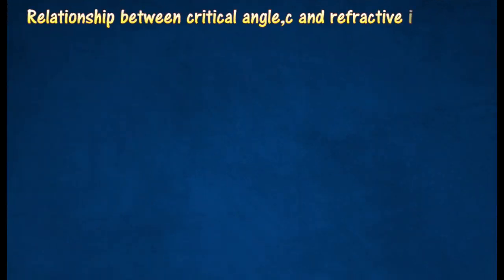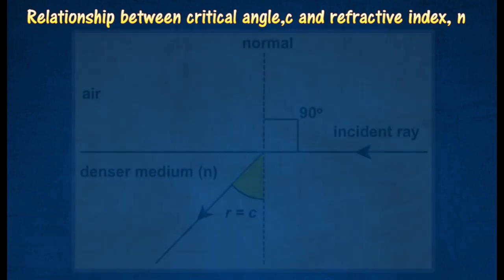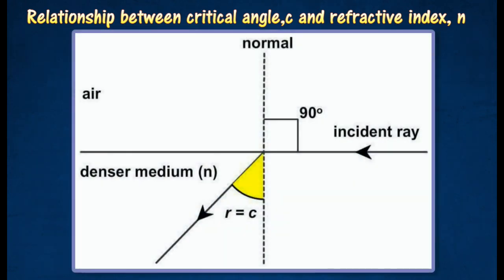Relationship between critical angle c and refractive index n. Consider a light ray incident at the boundary between two media at the critical angle c, being refracted at 90 degree to the normal. In accordance with the formula for refractive index...